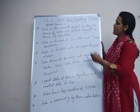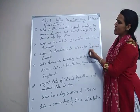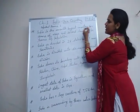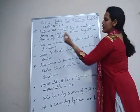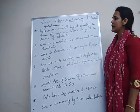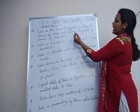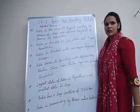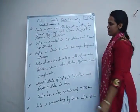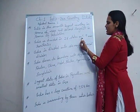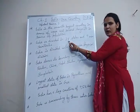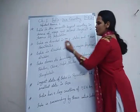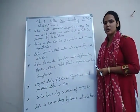Now let's revise chapter 1 — India, our country. India is the 7th largest country in terms of area and 2nd largest in terms of population, after China. India is divided into 28 states and 9 union territories. The two newly formed union territories are Jammu and Kashmir and Ladakh, as Jammu and Kashmir is no longer a state.